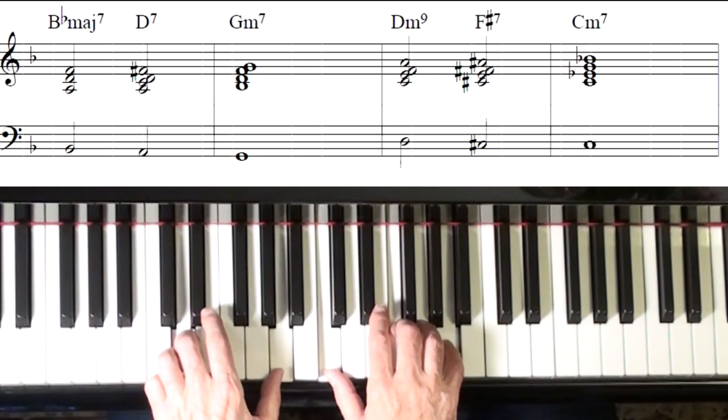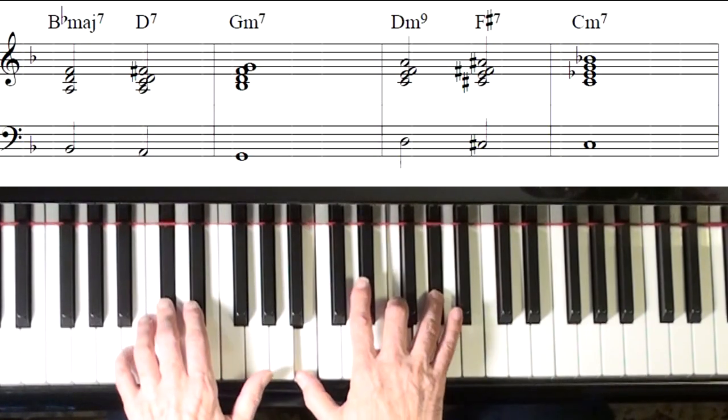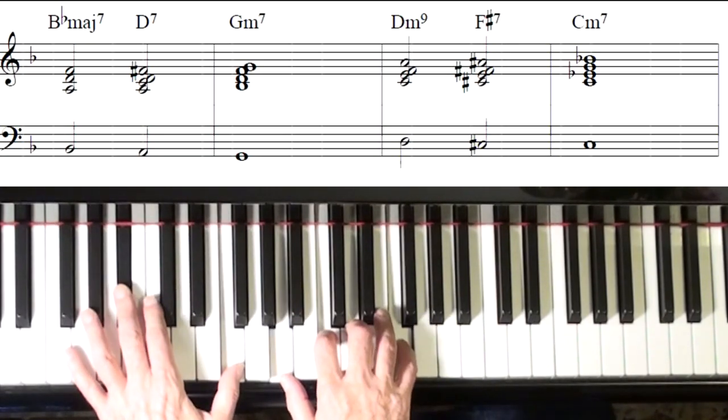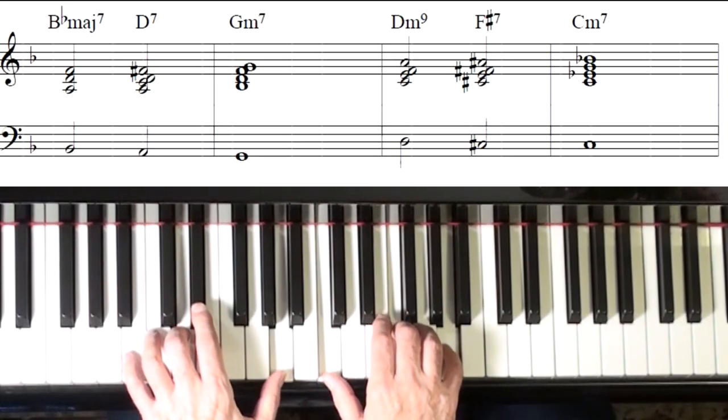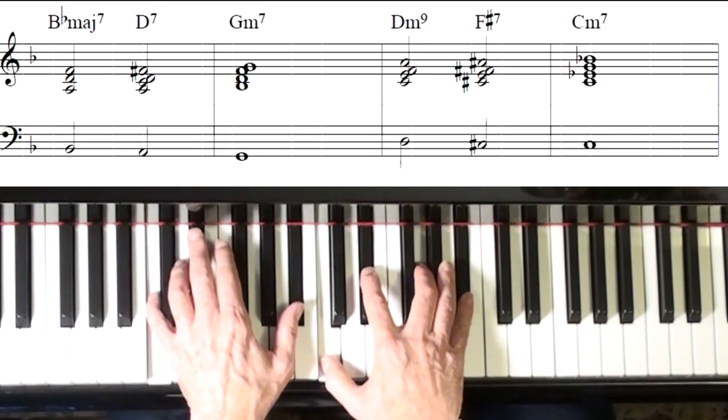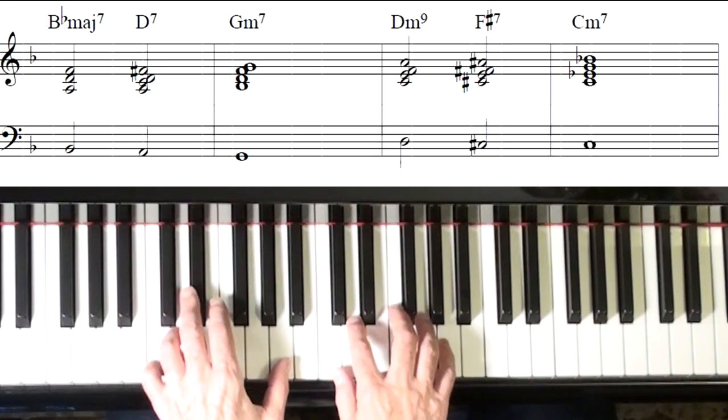And you do hear that a lot. Now in Have You Met Miss Jones, to go to the bridge, we get to that C minor and then F to get to the bridge. So you could use it here too. Go to F sharp or G flat there would work. Or maybe A.